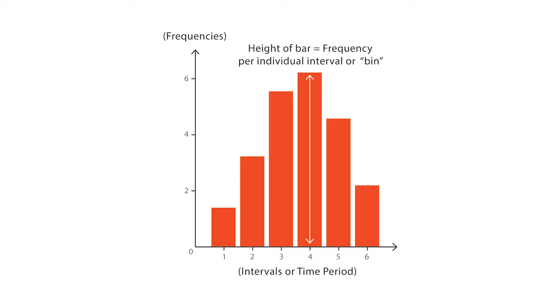Each bar in a histogram represents the tabulated frequency at each interval, also known as a bin.